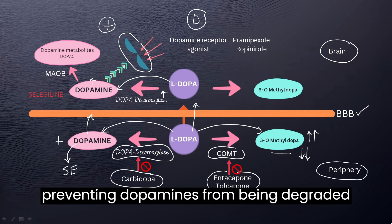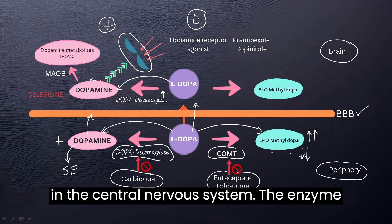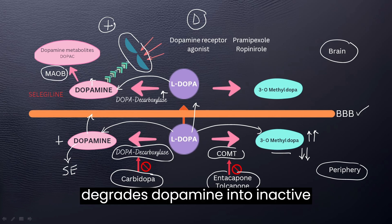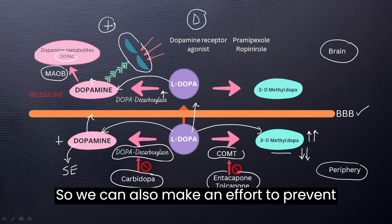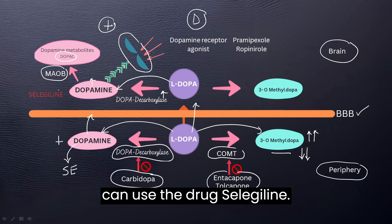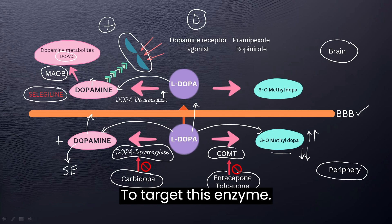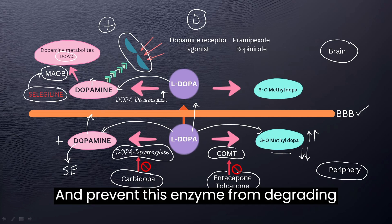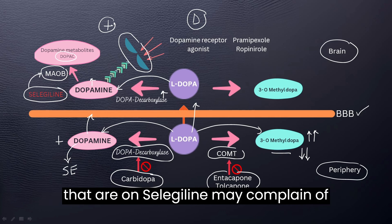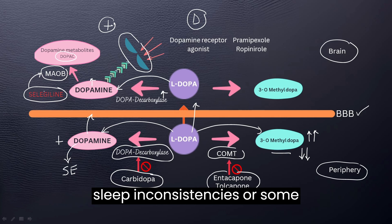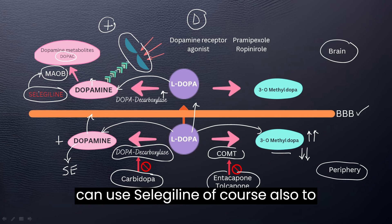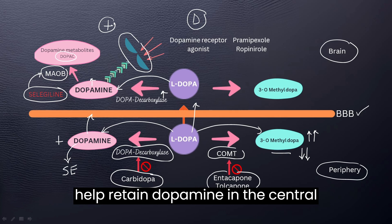Another area we can look at is preventing dopamine from being degraded in the central nervous system. The enzyme monoamine oxidase type B (MAO-B) degrades dopamine into inactive substances such as DOPAC. We can use the drug seligiline to target this enzyme and prevent it from degrading dopamine. Note that seligiline can be metabolized into amphetamine, so patients on seligiline may complain of sleep inconsistencies or agitation. Seligiline helps retain dopamine in the central nervous system.